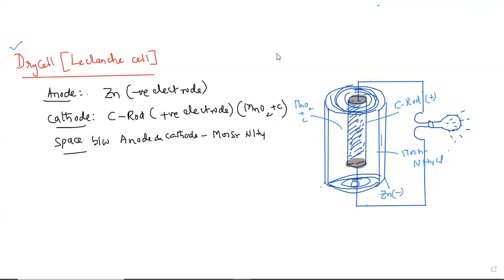Let us see the electrode reactions in this dry cell. Usually, as you know, at anode, oxidation reaction takes place. At anode, oxidation reaction takes place where zinc oxidizes to zinc ions: Zn → Zn2+ + 2e-. This is the anodic reaction.